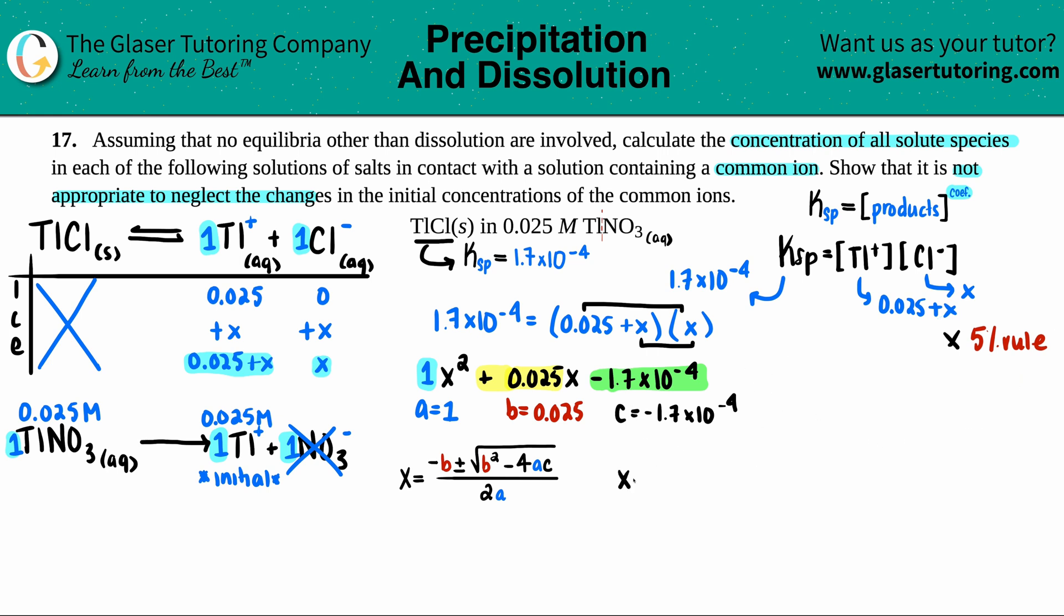Now here comes the quadratic: x = (-b ± √(b² - 4ac)) / 2a. x = -0.025 ± √(0.025² - 4 × 1 × -1.7×10⁻⁴) all over 2 × 1.